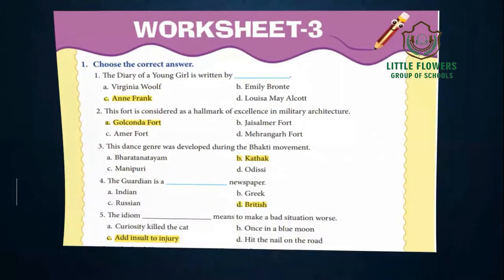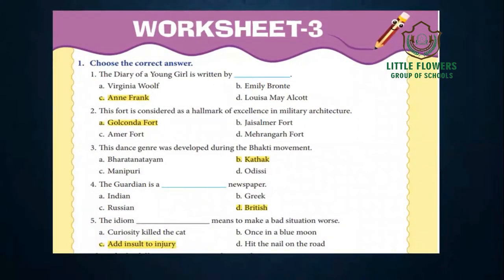Now let's move to worksheet number 3. Question one: The Diary of a Young Girl is written by — the answer is Anne Frank. Number two: Golconda Fort is considered a hallmark of excellence in military architecture. Number three: Kathak is the dance genre developed during the Bhakti movement. Number four: The Guardian is a British newspaper.